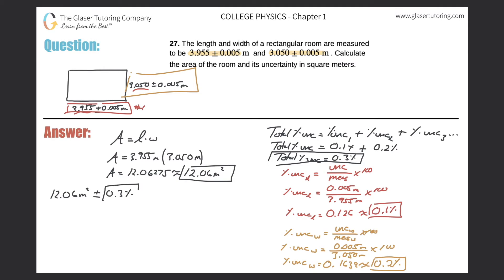Well, 0.3% of what? 0.3% of the measurement. That would be the answer if they wanted the area and its percent uncertainty. But they asked for the area and its uncertainty — not the percent. So we need one more calculation. Recall the formula: percent uncertainty equals the uncertainty of the measurement divided by the measurement, multiplied by 100. We calculated the total percent uncertainty to be 0.3%.